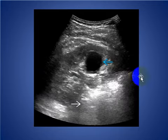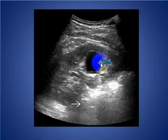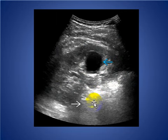This is an ultrasound, long axis of the kidney. We see a hypoechoic mass lesion in the mid-lateral kidney with acoustic enhancement, indicating that it is cystic in nature.